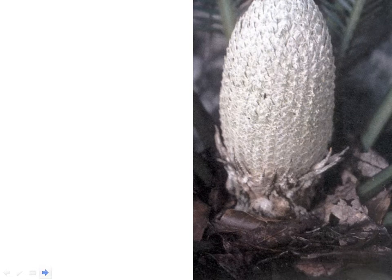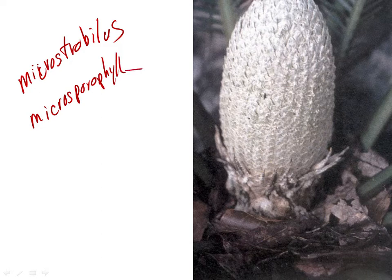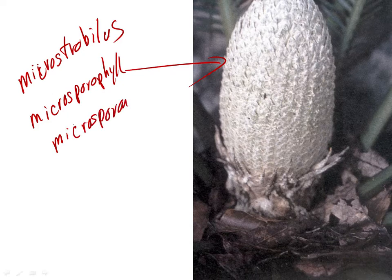Here again is a microstrobilus. Each of those sporophylls is a microsporophyll, and they will have microsporangia and pollen grains.